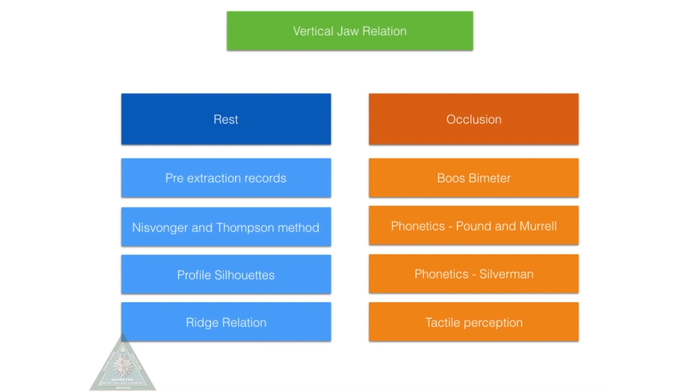The next most popular method is the Niswonger and Thompson method, where you ask a patient to say mm mm mm, and you mark a point on the nose and the chin and determine the distance, and that will be the vertical dimension at rest.